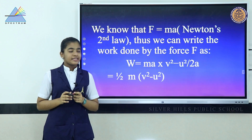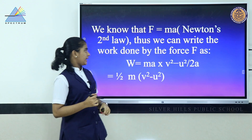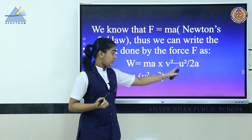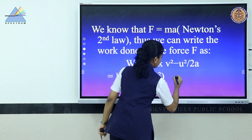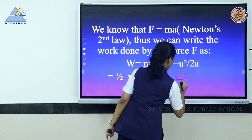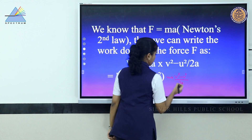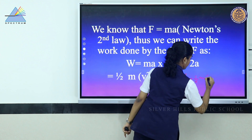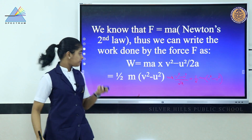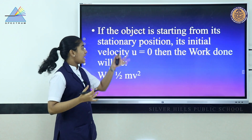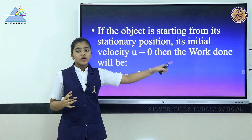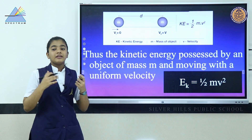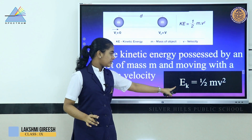By Newton's second law, F = ma. So work done = ma × (v² − u²) / 2a = ½m(v² − u²). If the object starts from rest, the initial velocity u = 0, so work done = ½mv². Thus the kinetic energy possessed by an object of mass m moving with velocity v is: KE = ½mv².